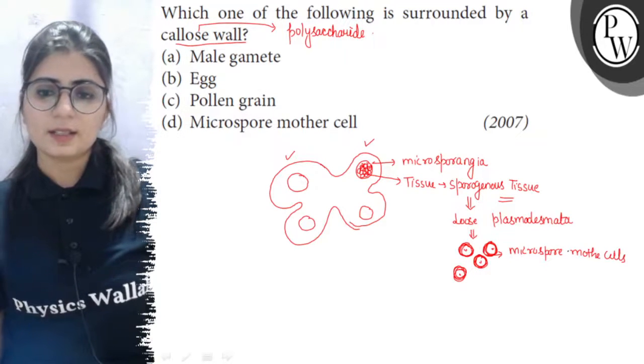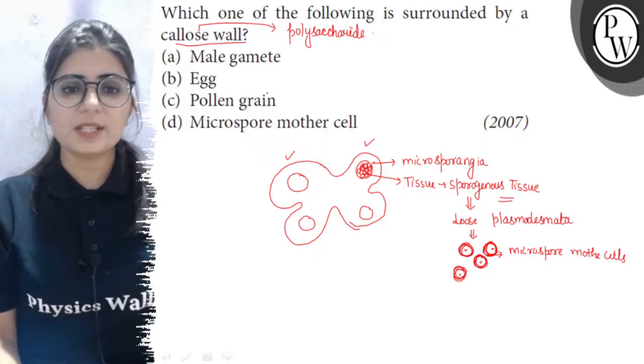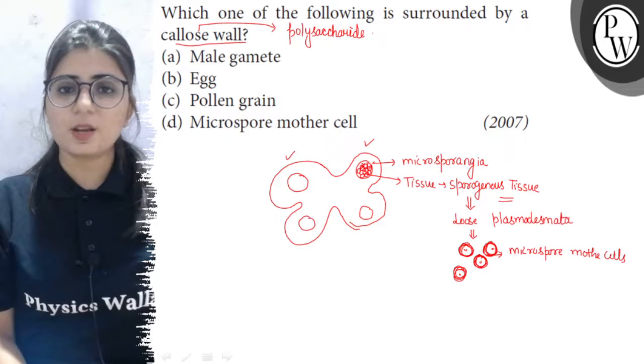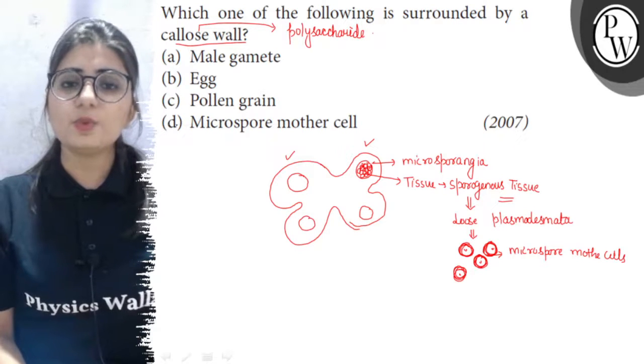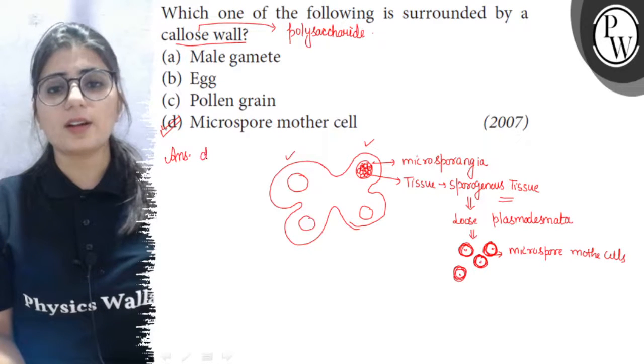So, here we can see that the callose wall or the deposition of this polysaccharide occurs around the microspore mother cell when they lose plasmodesmata connection. So, option D is the right answer.